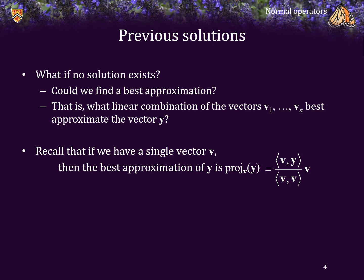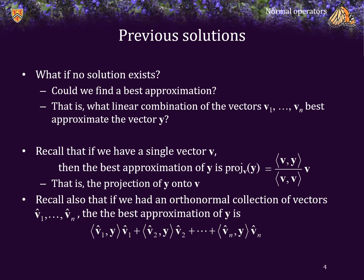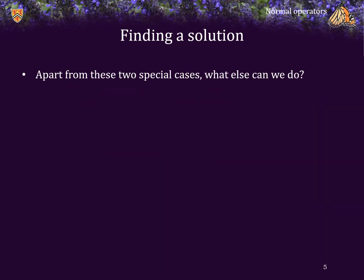Recall that if we had a single vector v, then the best approximation of y was the projection of y onto the vector v with the formula shown here. Recall also that if we had an orthonormal collection of vectors v-hat 1 through v-hat n, then the best approximation of the vector y can be found simply by calculating the inner products of each of these vectors with y, and these form the coefficients of a linear combination. But this only works if the vectors are orthonormal. So apart from these two special cases, what else could we do?